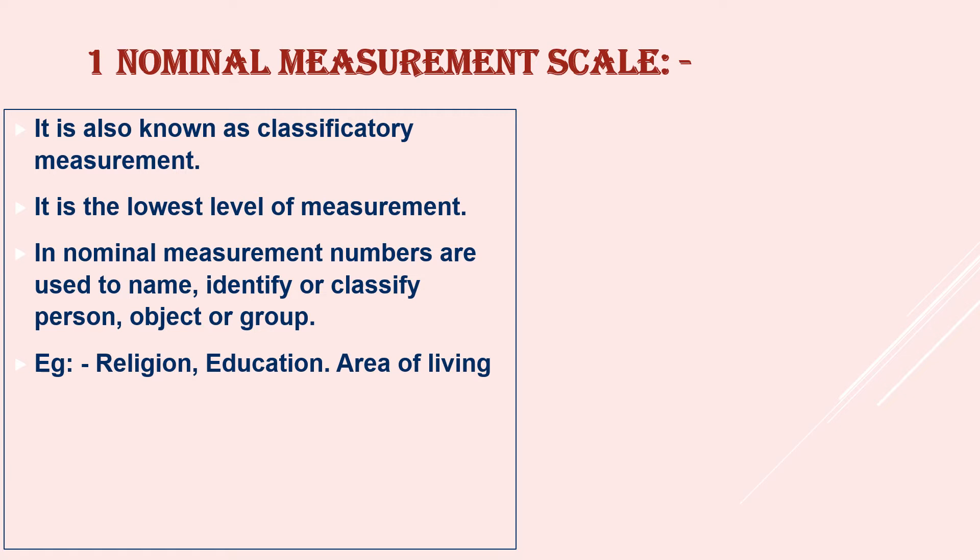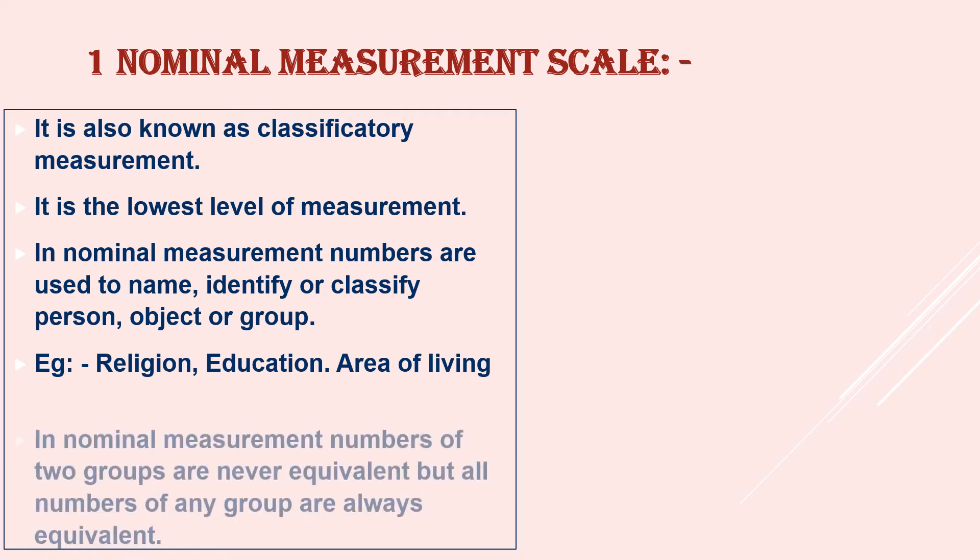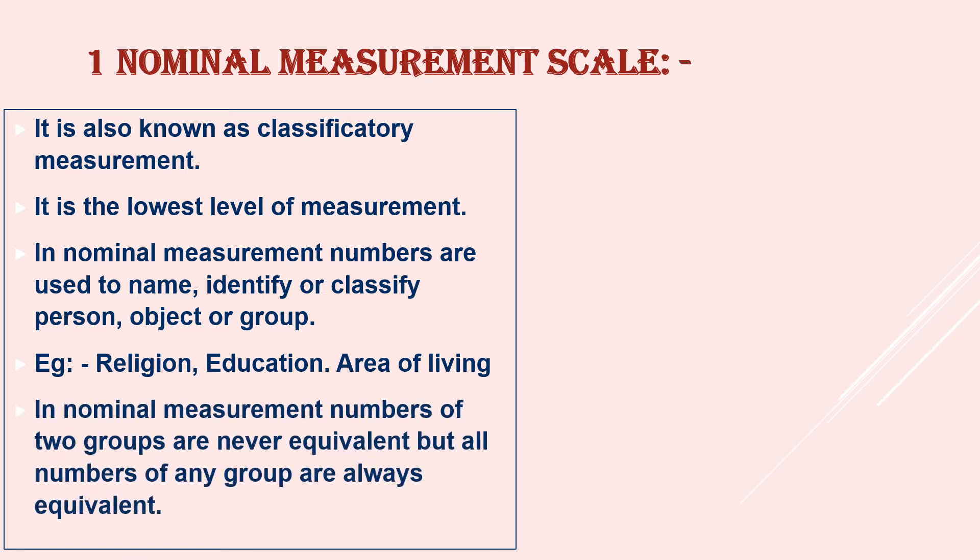education, area of living, even gender. These are some kind of nominal information, otherwise nominal data. In nominal measurement, numbers of two groups are never equivalent but all numbers of any group are always equal.